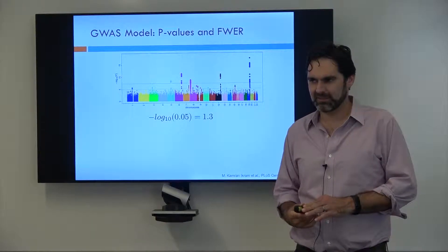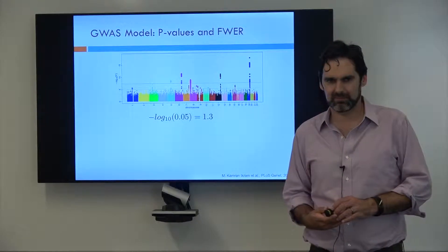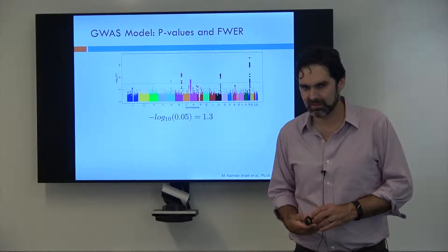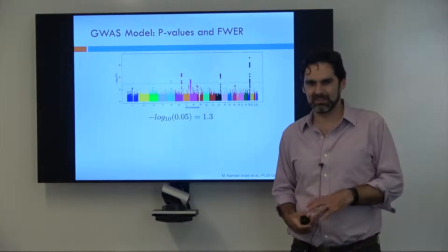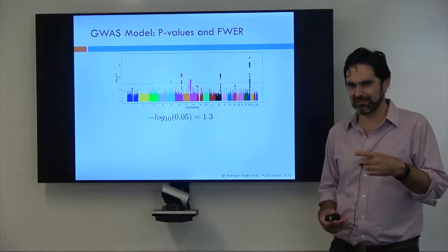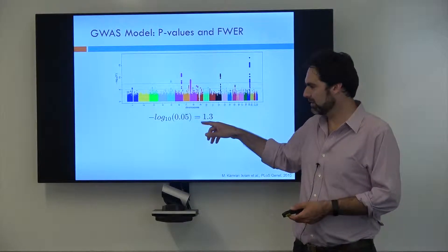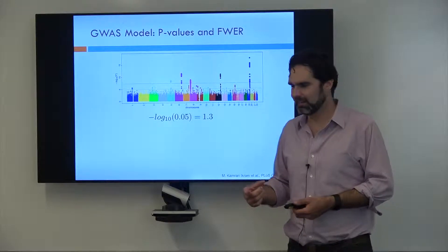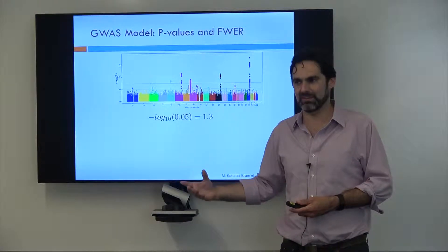Why not? There are so many variants that your family-wise error rate is really high. And what about the false discovery rate? So our family-wise error rate is going to be super high because the family-wise error rate is the probability of having one or more false discoveries. And if we're controlling at a threshold of 0.05, you actually expect 5% of your tests to be false discoveries.